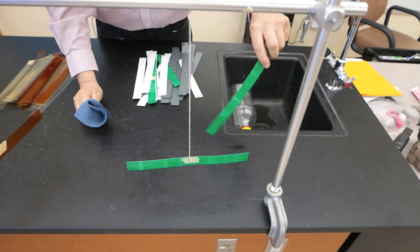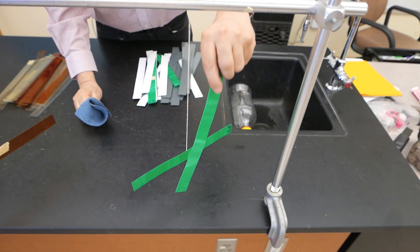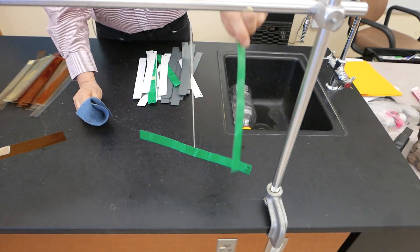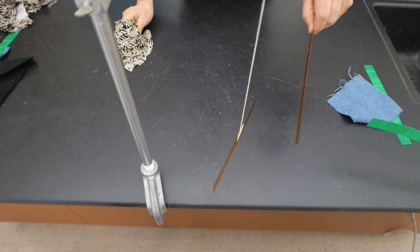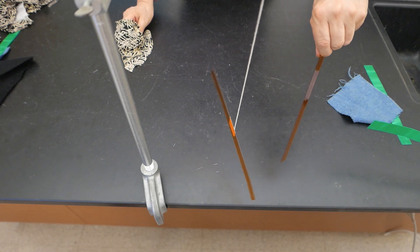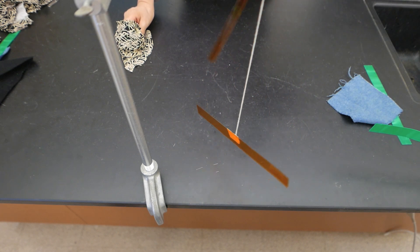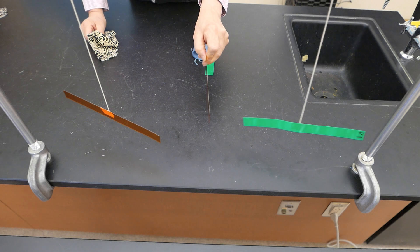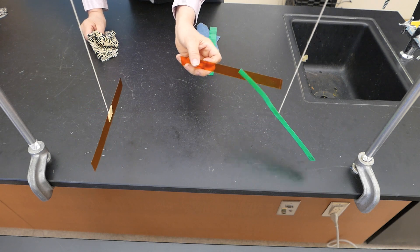Now in the previous video we looked at the behavior of charges. In this case these vinyl strips are negatively charged so they repel each other. When these acetate strips are rubbed with Orlon they become positively charged and as we can see they also repel each other. And finally we saw that positive and negative charges attract.